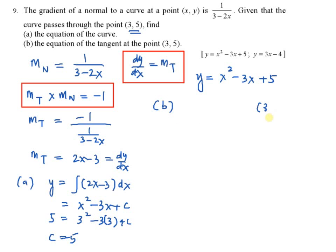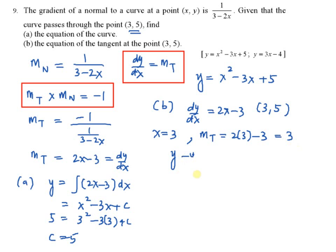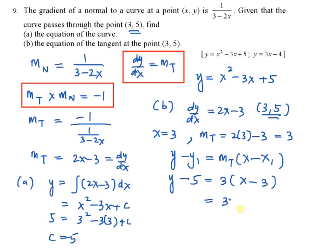Part b: the equation of the tangent at the point 3, 5. This is very simple because you already have dy/dx, that is 2x minus 3. When x equals 3, dy/dx — the gradient for the tangent — equals 2 times 3 minus 3, which equals 3. Using the equation y minus y1 equals gradient for tangent times (x minus x1), with the point 3, 5: y minus 5 equals 3(x minus 3). Expanding gives 3x minus 9, and rearranging, the equation for the tangent is y equal to 3x minus 4.